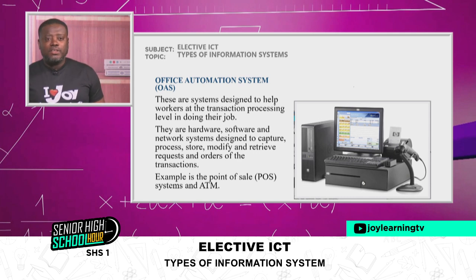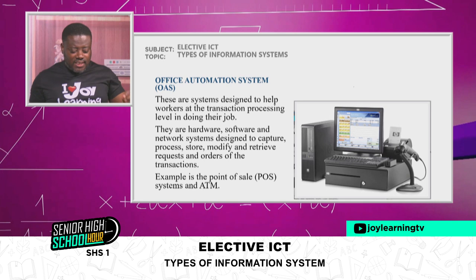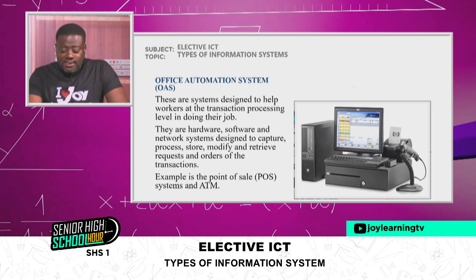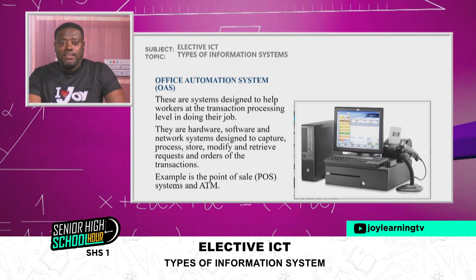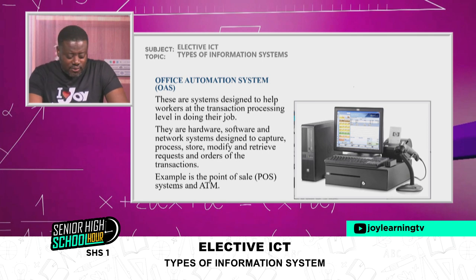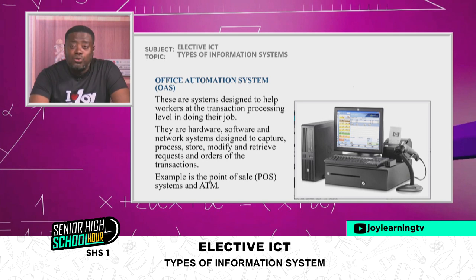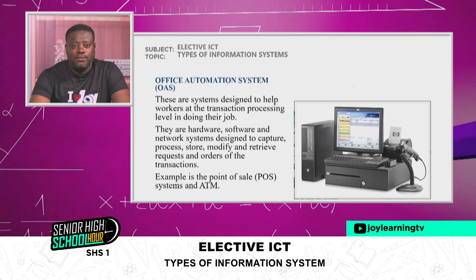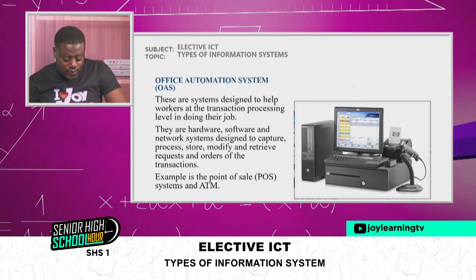Let's move on to the second type: Office Automation System, that is OAS. These are the systems designed to help workers at the transaction processing level in doing their job. The Office Automation Systems are the computers, scanners, and biometric machines used in capturing the basic data. They are the hardware, software, and network systems designed to capture, process, store, modify, and retrieve requests and orders of the transactions. An example of these is the Point of Sales (POS) systems and ATM systems, which are used in banks.